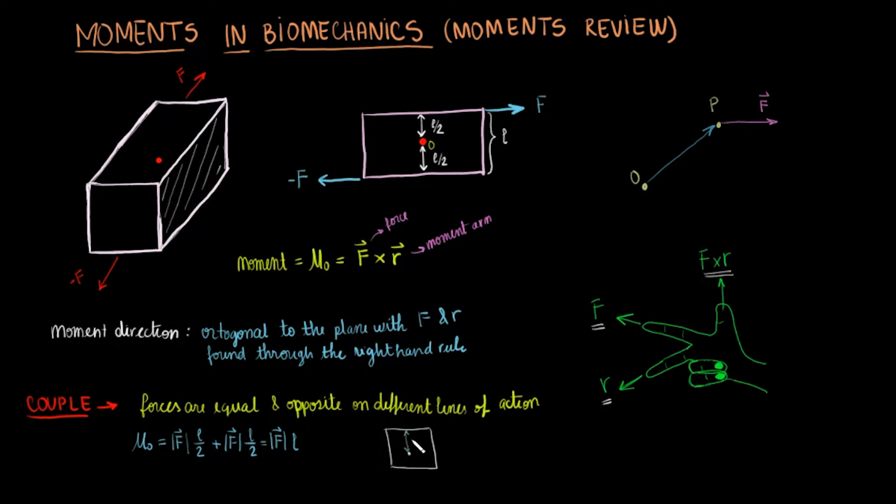If I move the origin down such that the moment arms are now 3 quarters L and 1 fourth L, when I add the moment arms, they are still the absolute value of F times L.